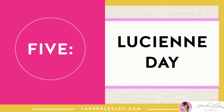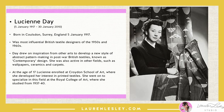Number five is Lucian Day. Born in Coulsdon, Surrey, England on the 5th of January 1917, she was the most influential British textile designer of the 1950s and 60s. Day drew on inspiration from other arts to develop a new style of abstract pattern-making in post-war British textiles, known as 'contemporary design.' She was also active in other fields such as wallpapers, ceramics, and carpets. At the age of 17, Lucian enrolled at the Croydon School of Art, where she developed her interest in printed textiles, and went on to specialize at the Royal College of Art, studying from 1937 to 1940.